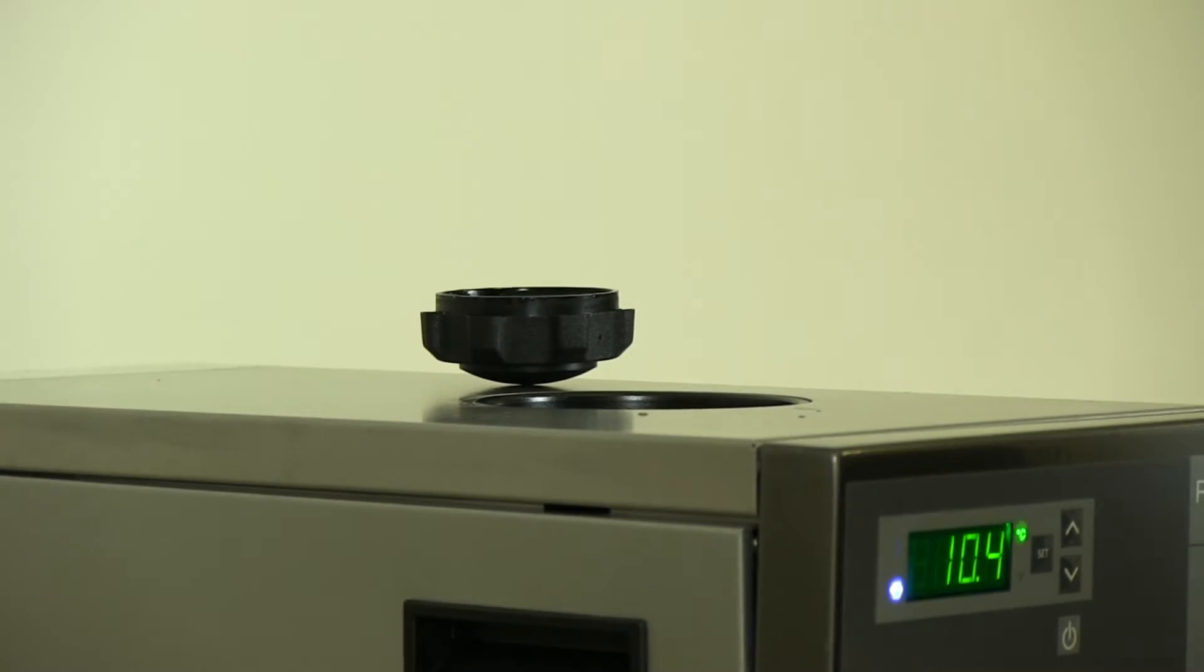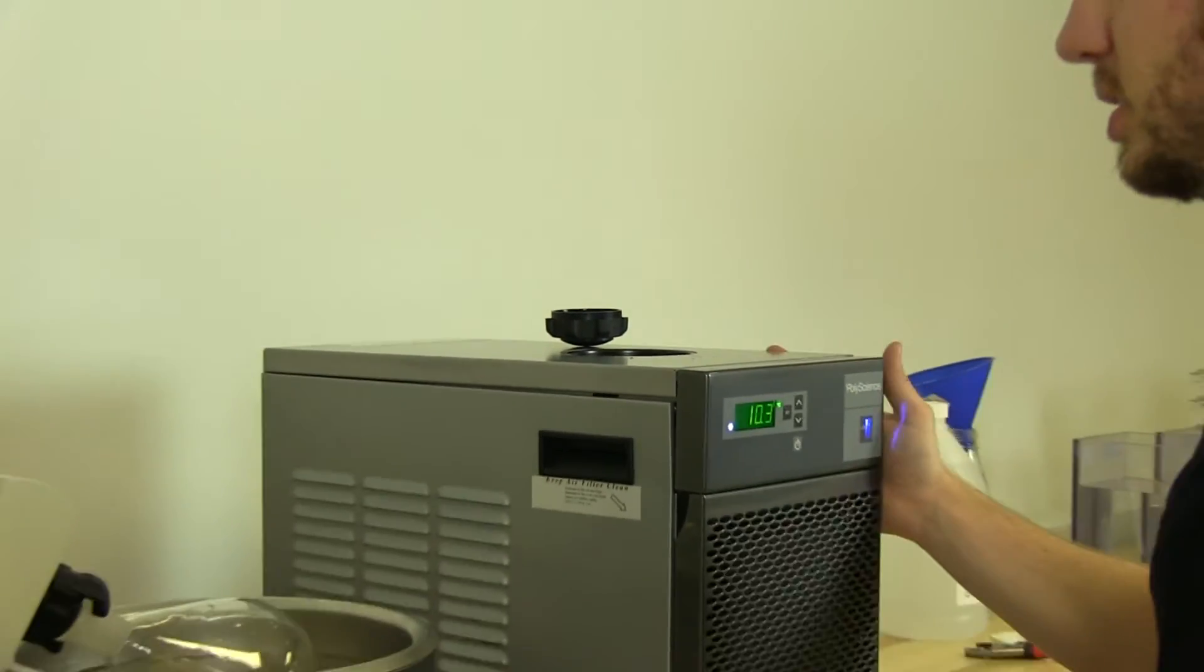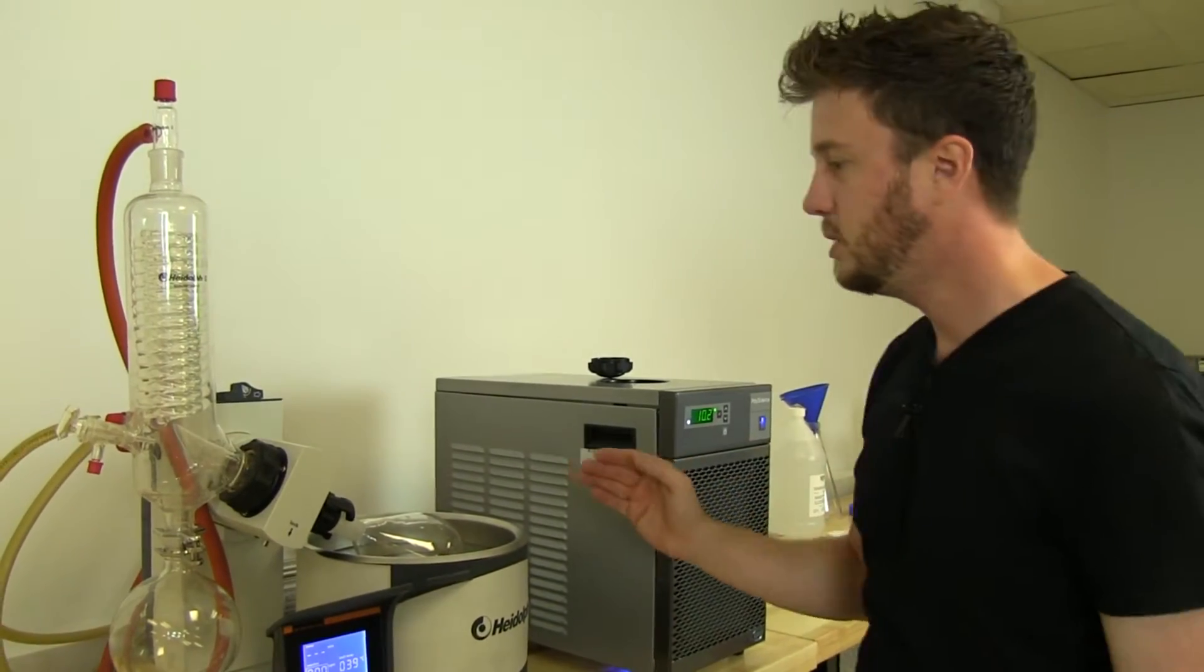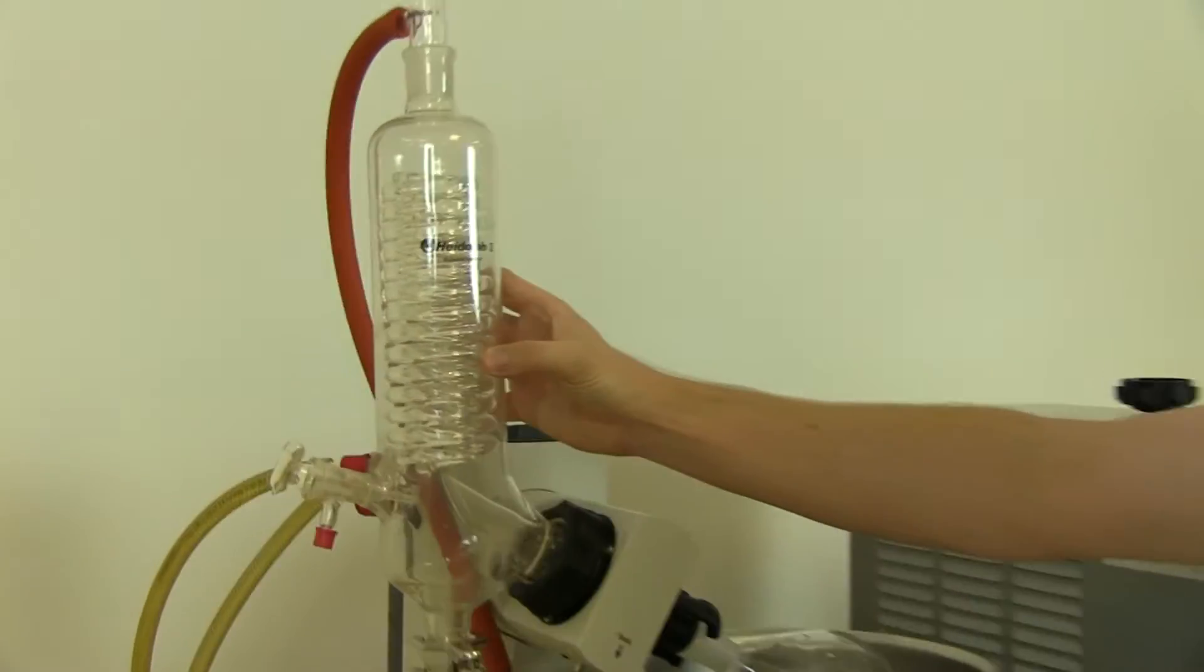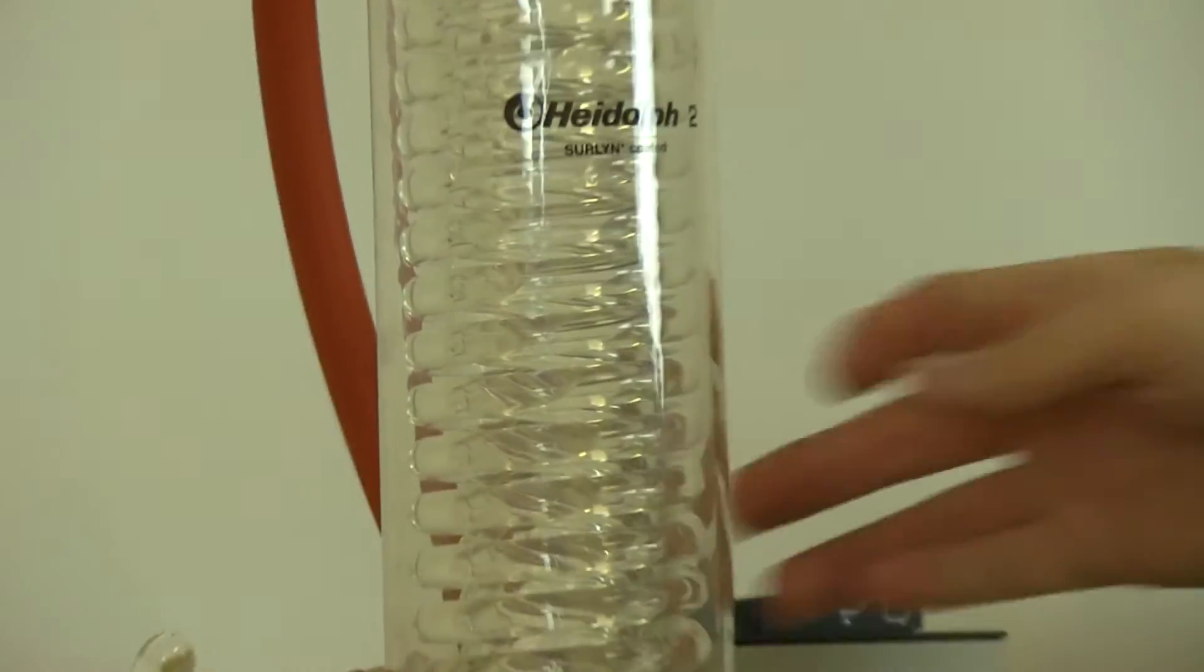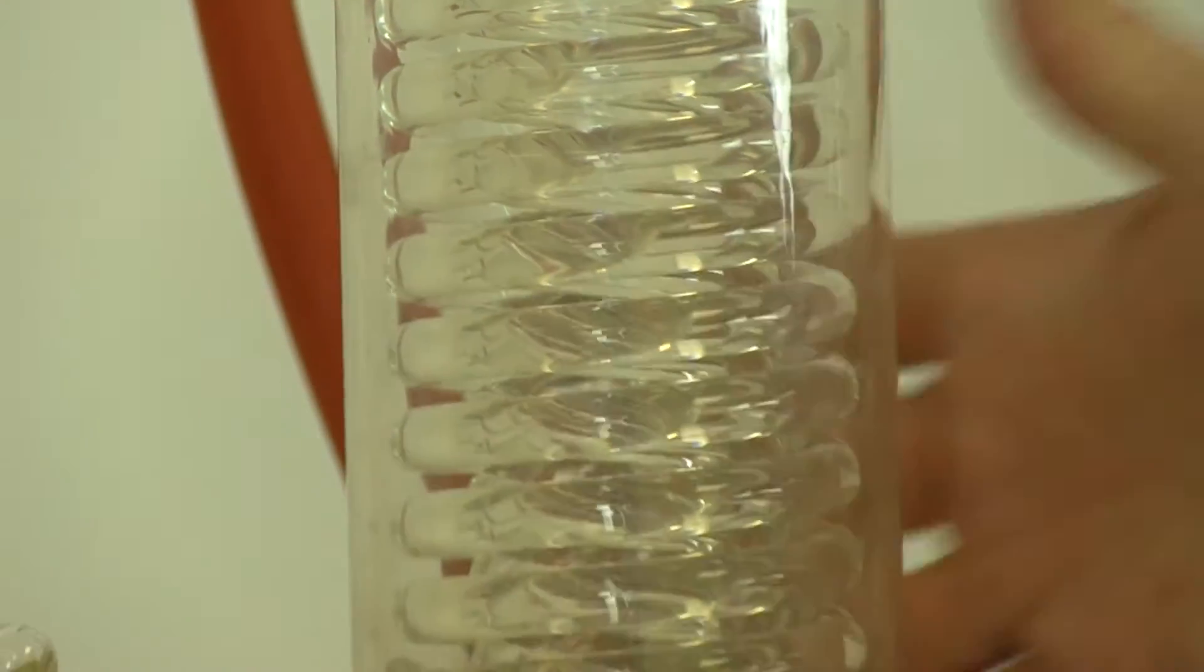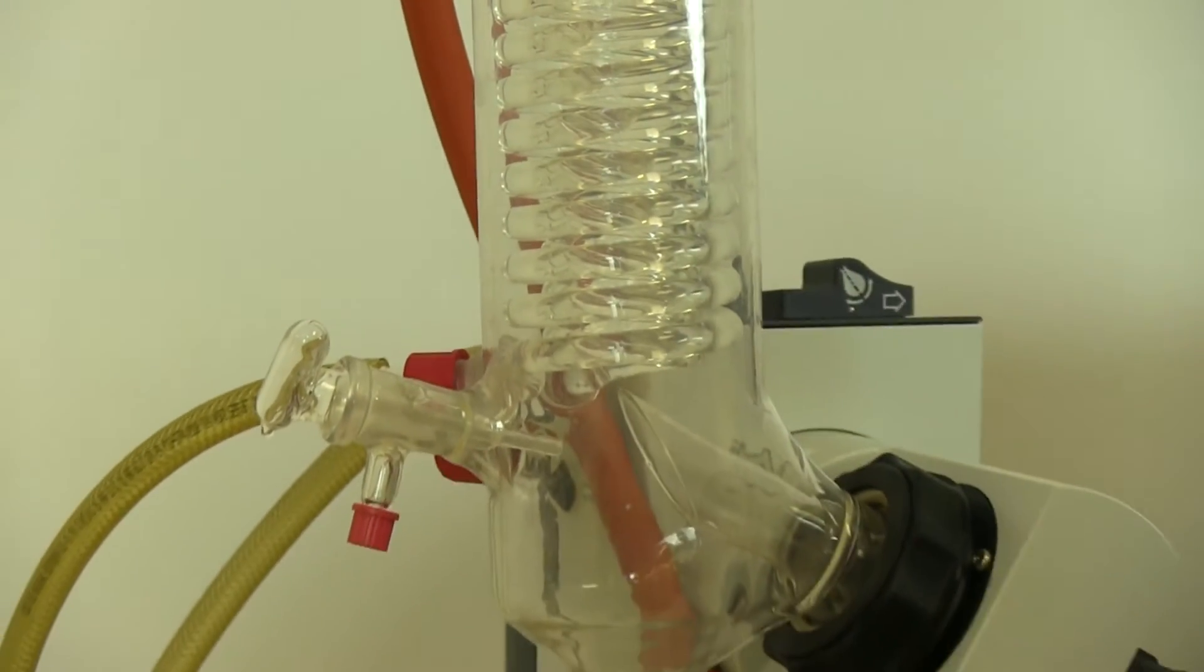So we fill the reservoir all the way up with water, we let the system settle, it starts to circulate through the condenser coil here. It's a good time to monitor any of your connections for leaks on your glassware and on the rear of the chiller.